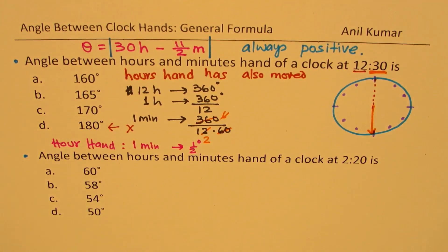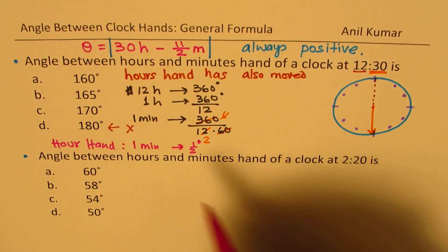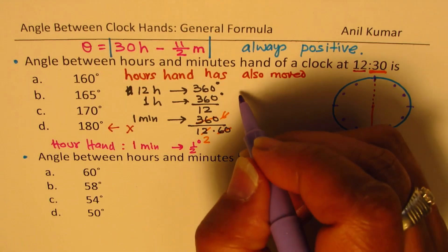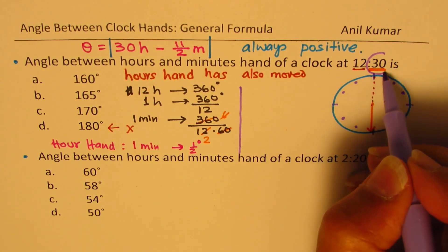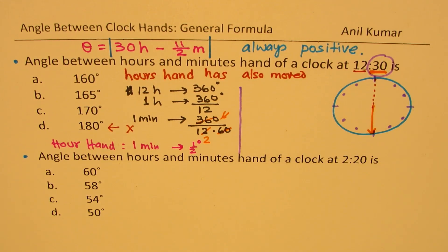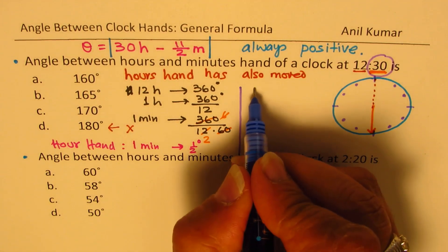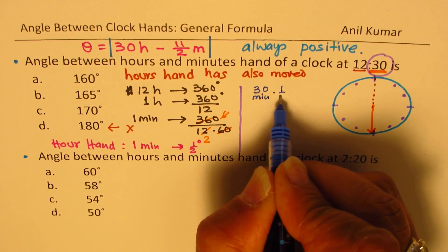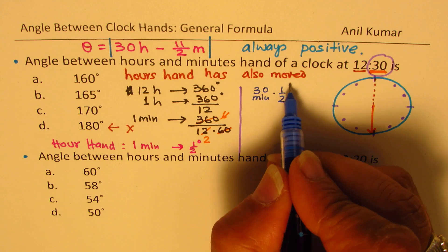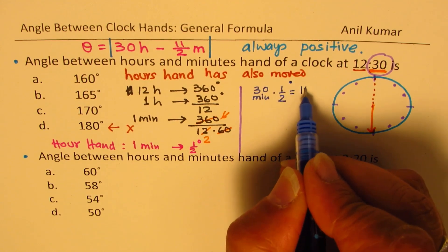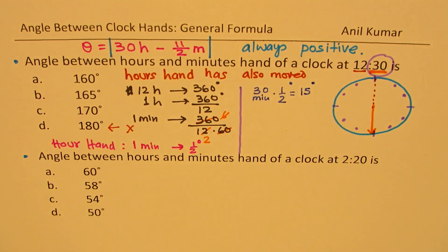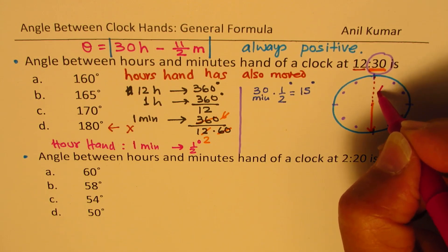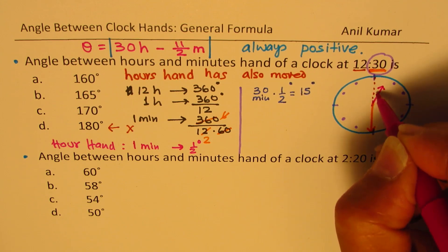So that is the speed with which the hour hand is moving. Now, in our case, the position is 30 minutes. So we can just calculate that in 30 minutes, it will go how many degrees? Half of 30, so many degrees. And that gives you 15 degrees. So that means the hour hand has moved by 15 degrees.